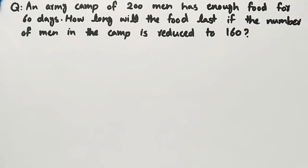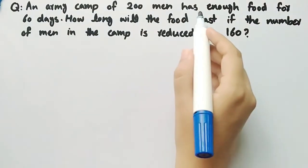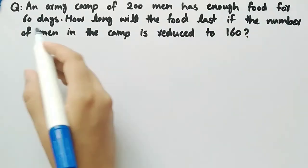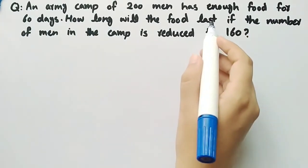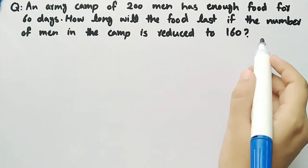In this video we will discuss a word problem related to proportion. The problem states that an army camp of 200 men has enough food for 60 days. How long will the food last if the number of men in the camp is reduced to 160?